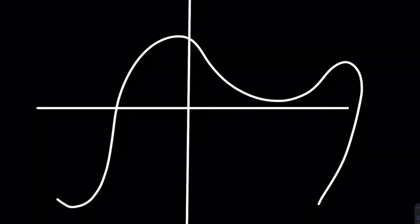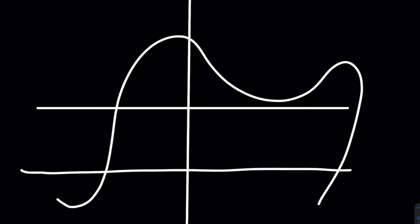Let's take a look at this random graph and determine whether or not it has an inverse function using the horizontal line test. If we draw a line here, we can see that it crosses through more than one point. So that means it does not have an inverse function.